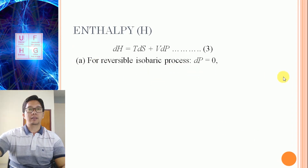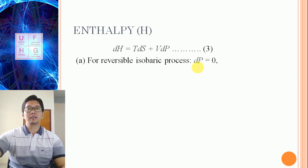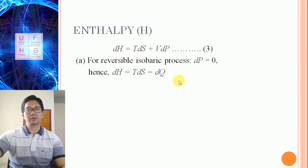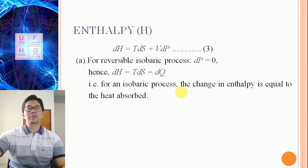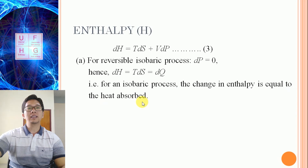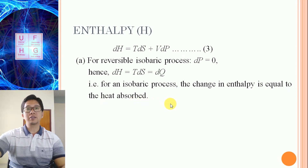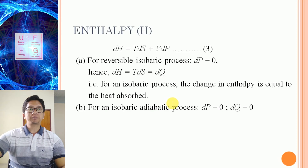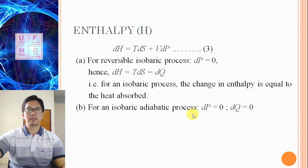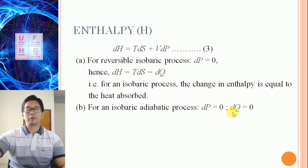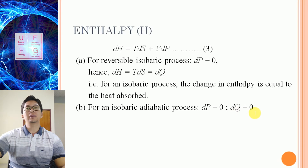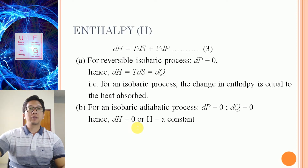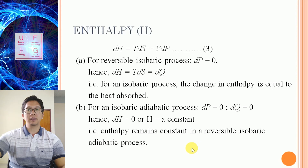For a reversible isobaric process, pressure remains constant so DP equals zero. From equation 3, DH equals TDS, which equals DQ. So for an isobaric process, change in enthalpy equals the heat absorbed or emitted. For an isobaric adiabatic process, DP equals zero and DQ equals zero, hence DH equals zero — H is constant. Enthalpy remains constant in a reversible isobaric adiabatic process.